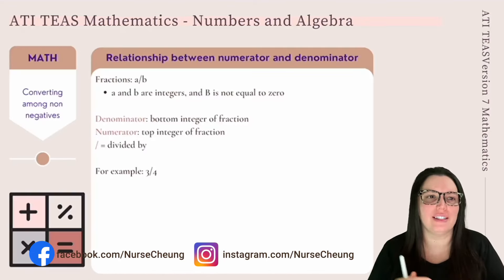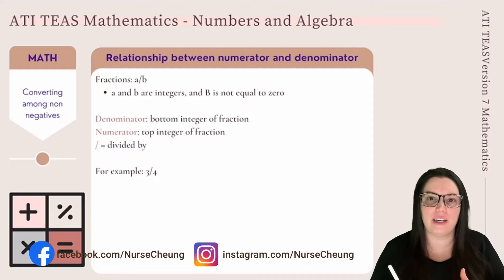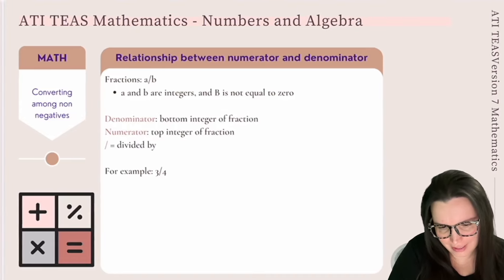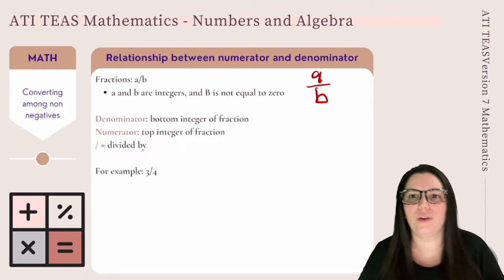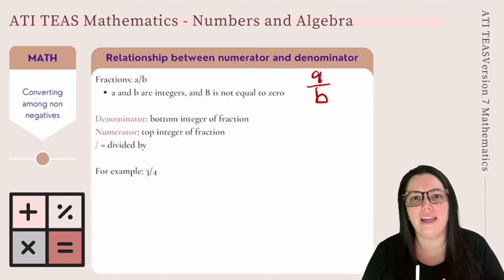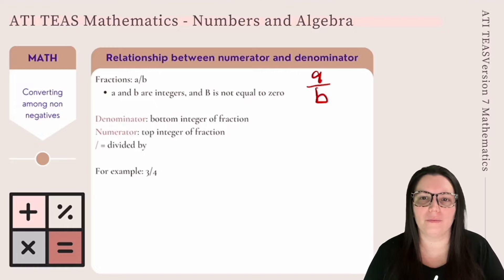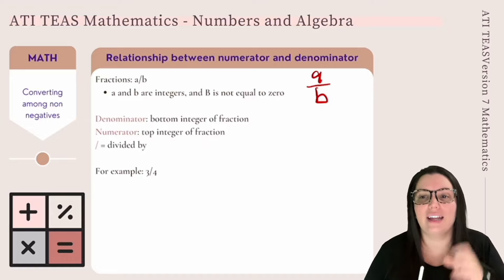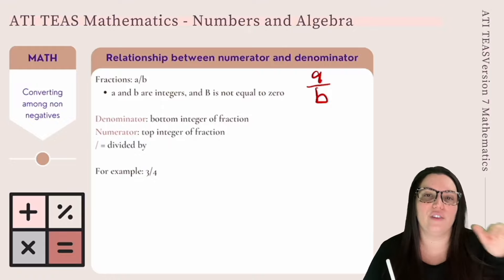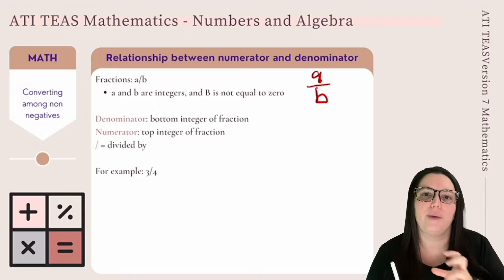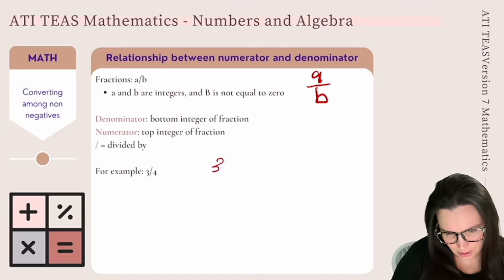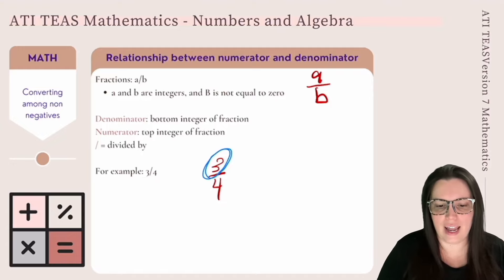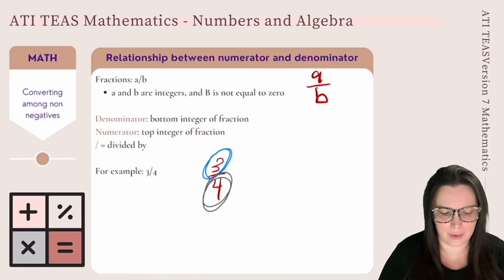We begin by looking at fractions — specifically the relationship between the numerator and the denominator. Fractions can be written in the form a over b, where a and b are both integers and b is not equal to zero. You can never have a zero at the bottom of your fraction. Integers are a set of whole numbers and their opposites. The bottom integer is called the denominator and the top integer is called the numerator. The line between them represents division, so a over b reads as a divided by b. For example, in the fraction 3 over 4, the numerator is 3 and the denominator is 4.